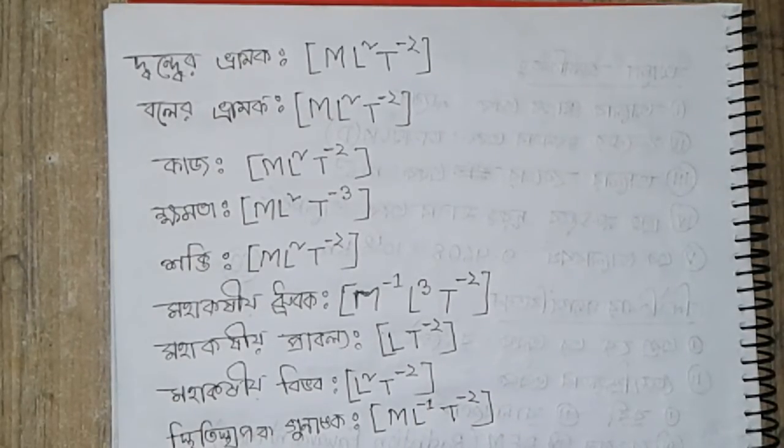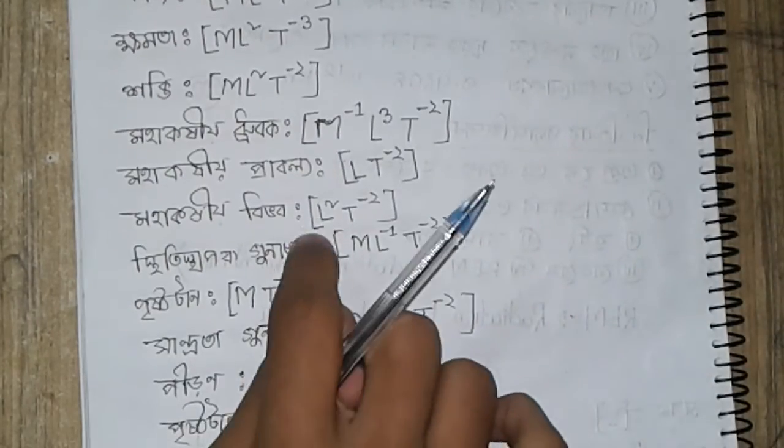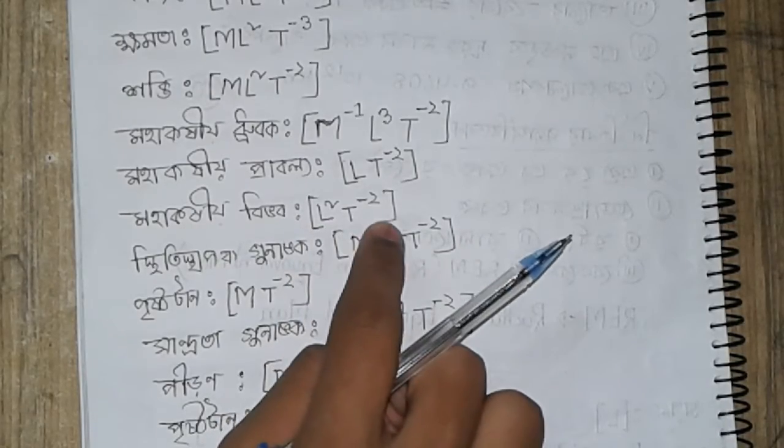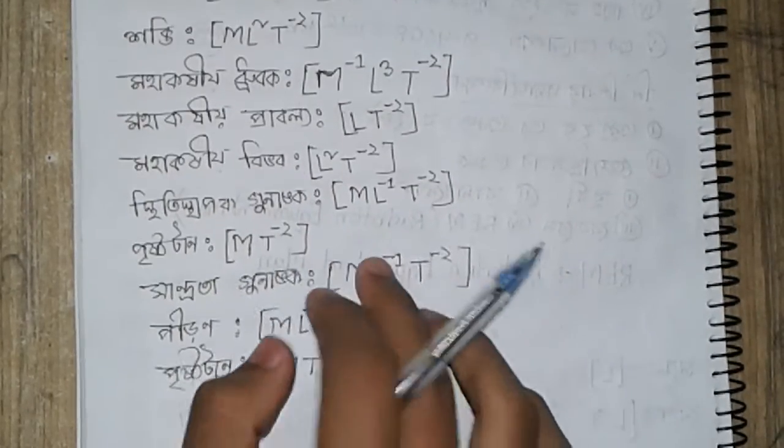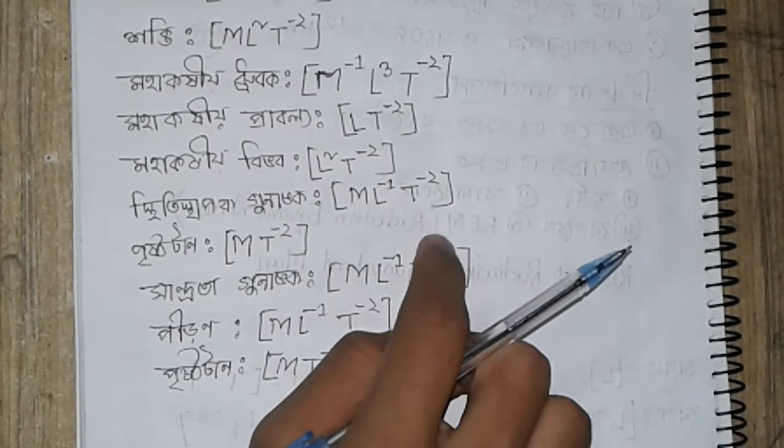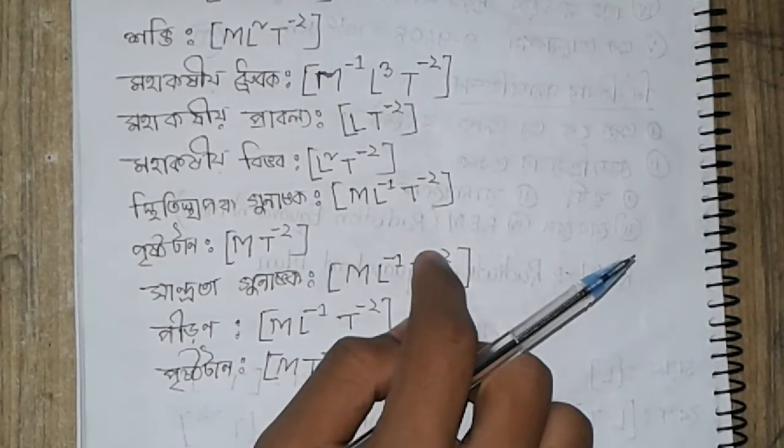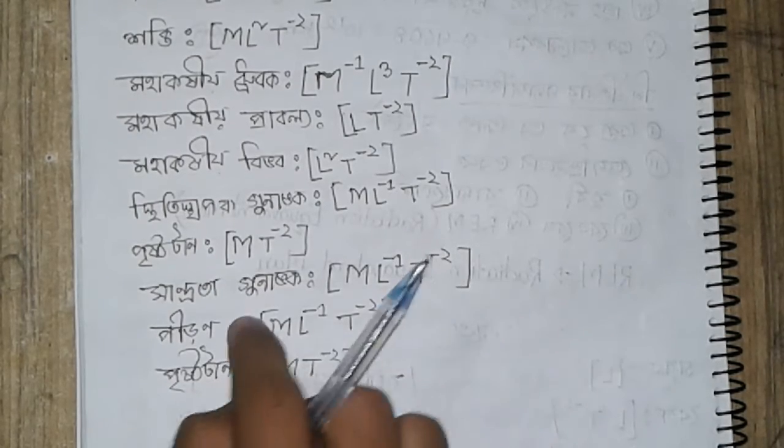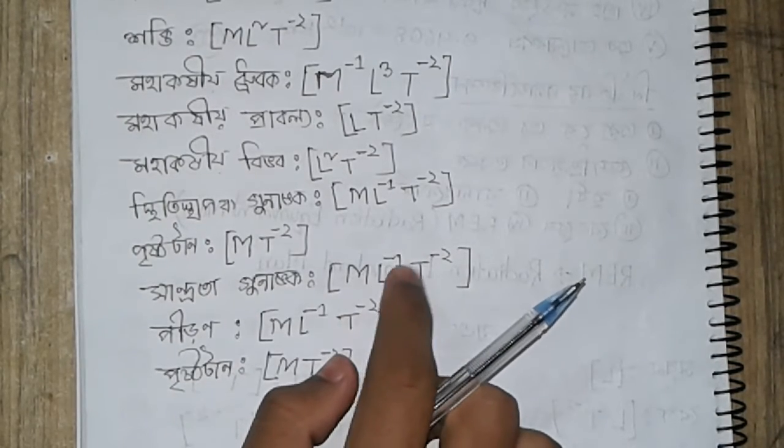For this quantity, the dimension is L square T inverse two. The dimensional constant is ML inverse one T inverse two, and the coefficient is MT inverse two with dimension ML inverse one T inverse two.